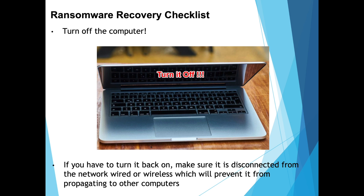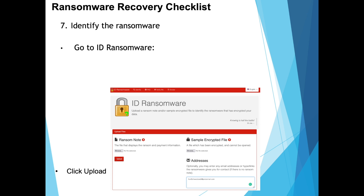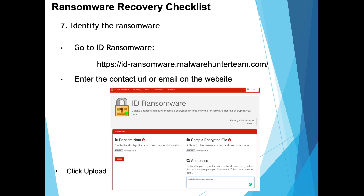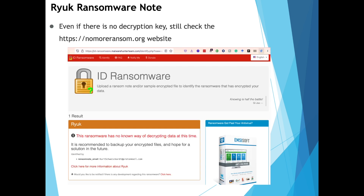If you turn it back on, make sure you have your Wi-Fi and your network cable disconnected. You can go to the ID Ransomware website and check and see what type of ransomware it is. Enter the email or contact URL — in this case, we have the contact email — and hit the upload button. They don't have the decryption key for this particular one.